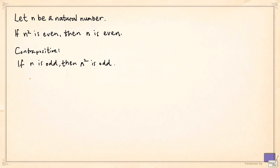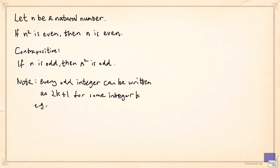First, notice that every odd integer can be written as 2k plus 1 for some integer k. For example, if you look at the integer minus 5, it can be written as 2 times minus 3 plus 1.